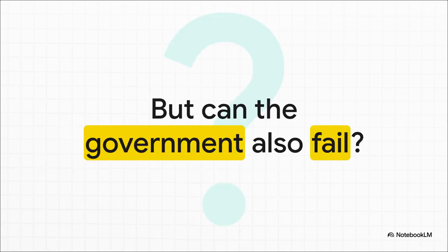And for a real twist, you can explore the idea of government failure — that's really the perfect question to end on. We've spent this whole time talking about the government as the mechanic who fixes the broken market. But what if the mechanic is clumsy? What if the solution they come up with actually creates a whole new set of problems, maybe even worse than the original one? That's a whole other topic, but it's a crucial piece of the puzzle to keep in mind.